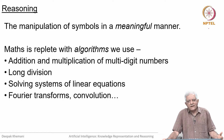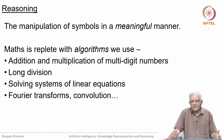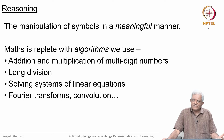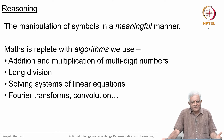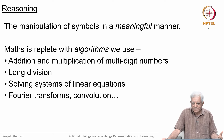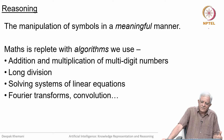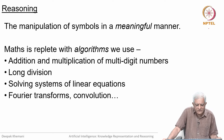These are meaningful because if you add 7 to 21 you get 28 — and if you had 21 apples and put 7 more in a basket and counted them again you would have 28 apples. That is what we mean by saying the mechanism for producing 28 by adding 7 and 21 is a meaningful procedure. So reasoning is the manipulation of symbols in a meaningful fashion, and we are going to be interested in that throughout this course. Other things we learn in math: long division, solving systems of linear equations, Fourier transforms, convolution functions and so on.